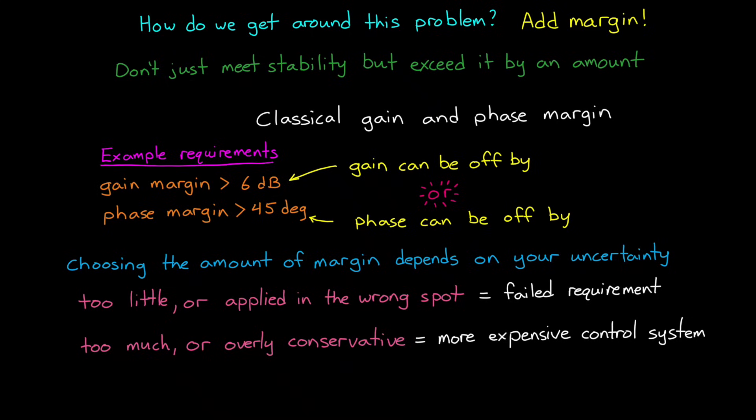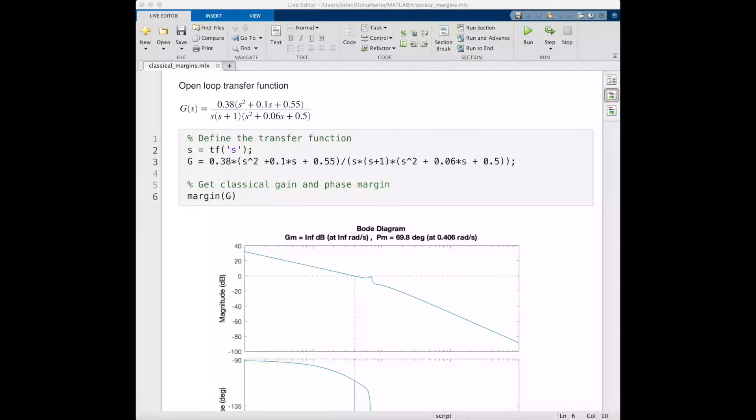So the trick is to choose the perfect amount of margin, and to apply it to the right places. And gain and phase margins are just one way to assess the robustness of your system. And they're useful for sure, but they don't necessarily give a complete view of how robust your system is.